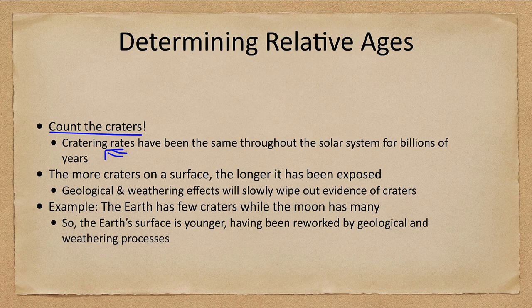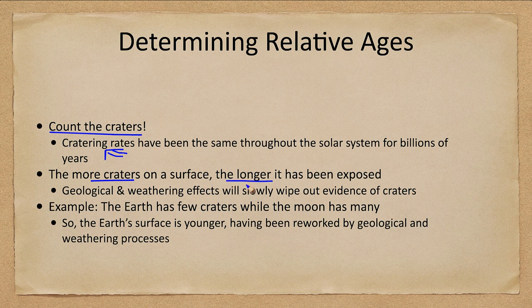So if we see a certain number of craters per square kilometer on the moon, we can use that for comparing ages to other objects in the solar system, whether in the inner or outer parts. The more craters we see, the longer that surface has been exposed to space and unchanged. Geological and weathering effects will change and wipe out craters.